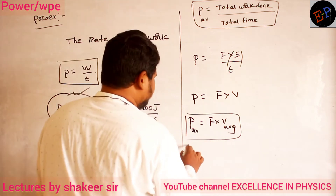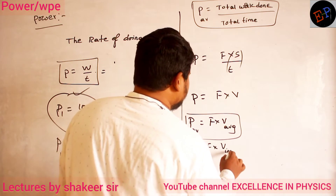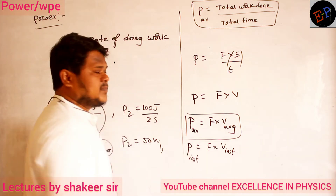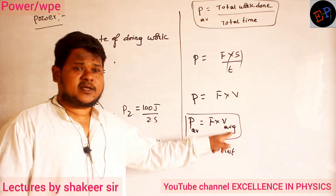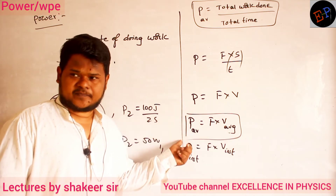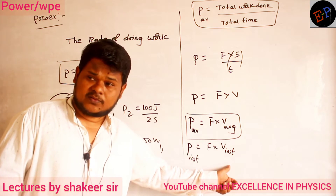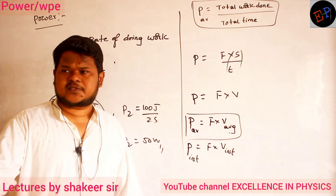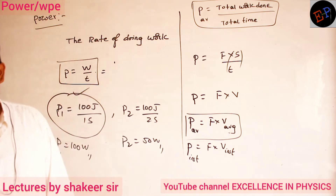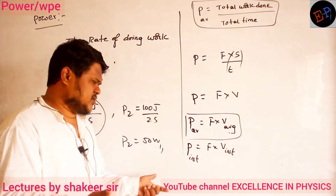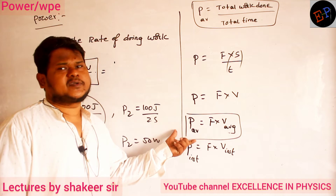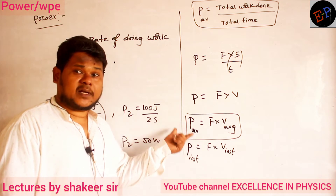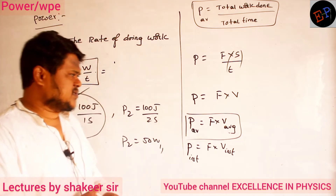Or if you take force into instantaneous velocity — velocity at a particular instant — then power is also instantaneous power. So force into average velocity gives average power, and force into instantaneous velocity gives instantaneous power. These are the equations of power you should remember, for average power as well as instantaneous power. In some conditions, instantaneous power is two times the average power — when the velocity of the body increases.